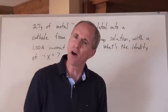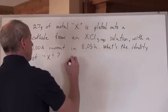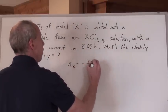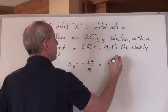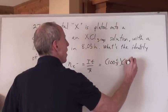Okay so here's something that you know. You've got current and time and you know that there's a formula: number of moles of electrons equals It over Faraday's constant. So if you put everything into there, 1.00 coulombs per second which is the amperage times the time of 8.05 hours. Wait a minute, can't use hours.